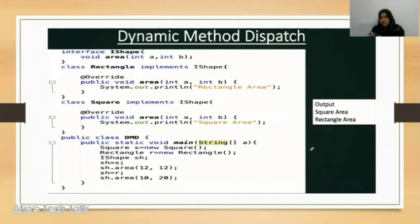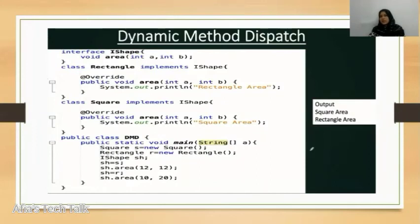Dynamic method dispatch: we use a class, access and pass methods for dispatch. We create an IShape interface and create an area method. We use a Rectangle or Square class to implement the IShape interface.